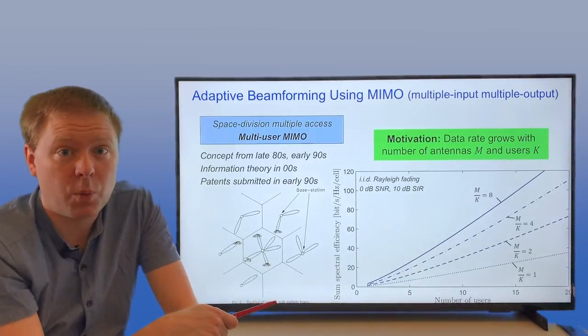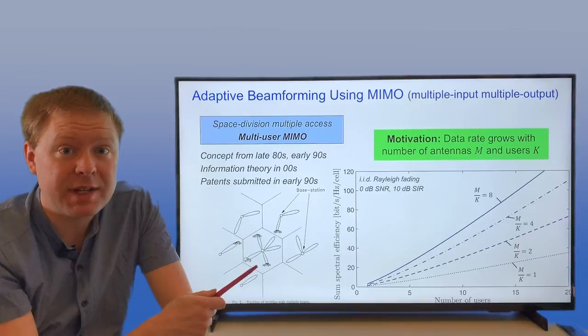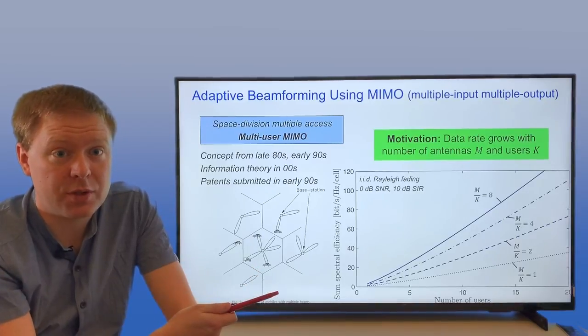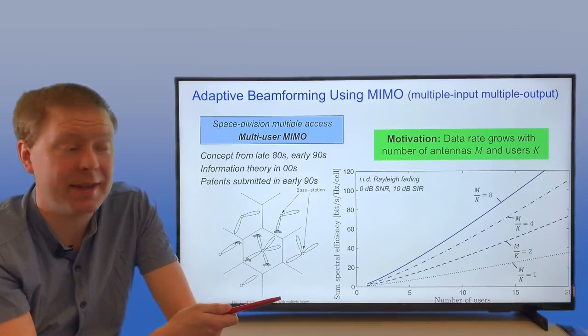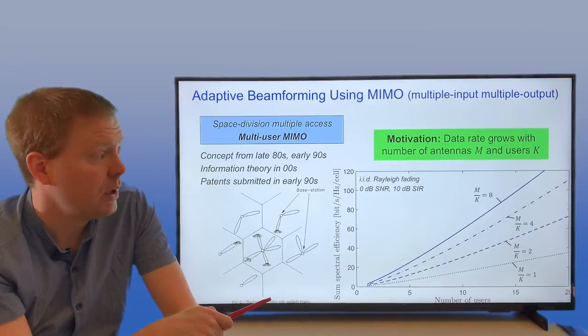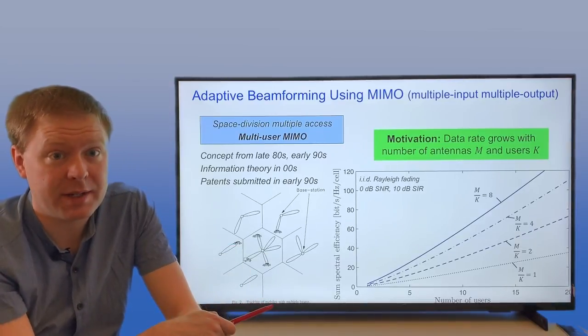This is the motivation for why you're not only increasing the number of antennas as you add more users into the system, but you should increase them at a faster pace. So you always have, say, four or eight times more antennas than you have users.